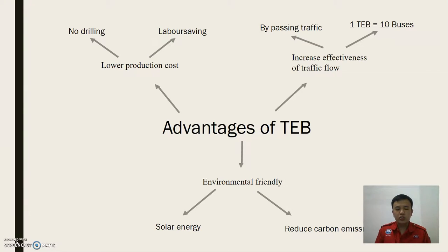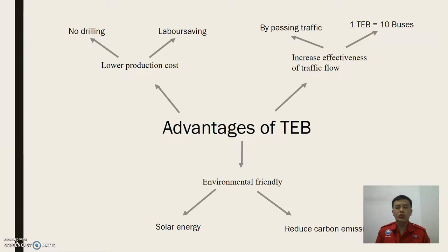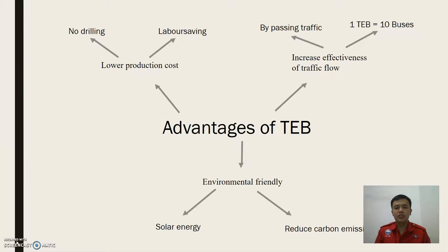According to the designer Song Yong Jo, the T-E-B can reduce 2,500 tons of carbon emissions annually. This proves that T-E-B is more environmentally friendly compared to typical classic buses.